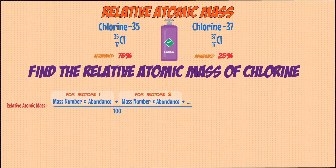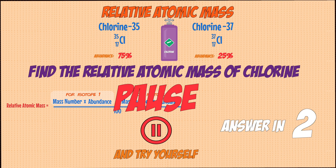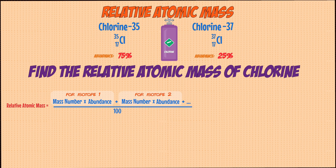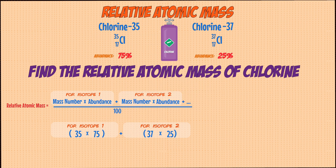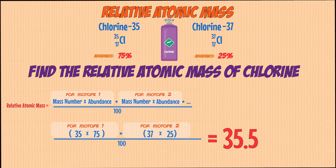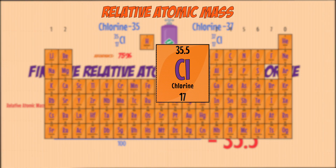Let's work out the relative atomic mass of chlorine using this equation. For isotope 1, we use its mass number of 35 multiplied by the abundance of 75. For isotope 2, it's a mass number of 37 multiplied by 25. You then add them together and divide the whole thing by 100 to give a final answer of 35.5. If you check this on the periodic table, you'll see that chlorine does have a relative atomic mass of 35.5.